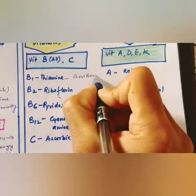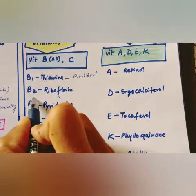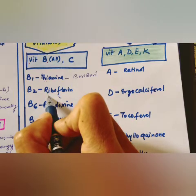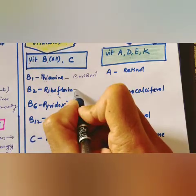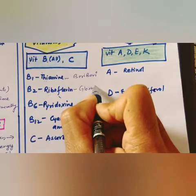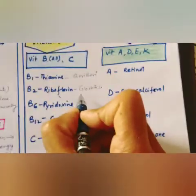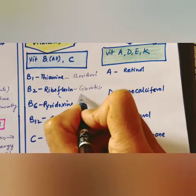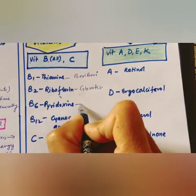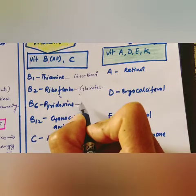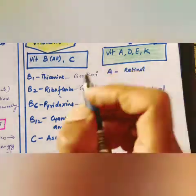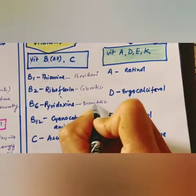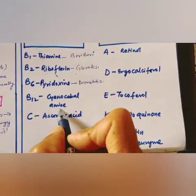Vitamin B2 is known as riboflavin. Sources include turnip, milk, eggs, yeast, vegetables, liver, and kidney. Deficiency of vitamin B2 causes glossitis — dark red tongue, dermatitis, cheilosis, and fissuring at corners of the mouth and lips. Vitamin B6 is pyridoxine; sources include yeast, milk, meat, fish, egg yolk, whole cereals, and grams. Its deficiency causes dermatitis.